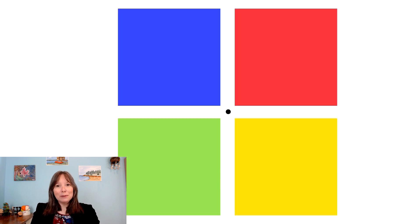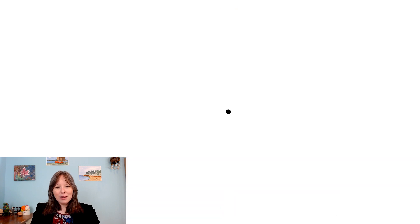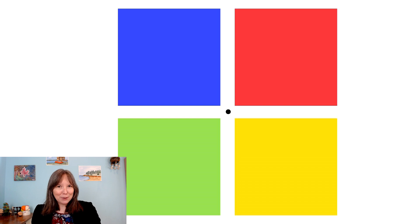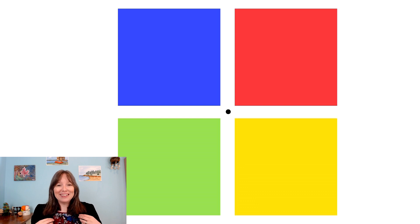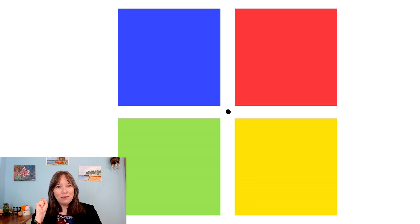Did you see anything? What you might have noticed is yellow, teal, pink, and purple. When the blue disappeared you might have seen yellow; when the red disappeared you might have seen teal or viridian green; and when the green and yellow disappeared you might have seen pink and purple respectively. Although there are no pink or teal wavelengths in the picture, we're creating a visual illusion — when we remove the green, we see its opposite, a pinkish color.